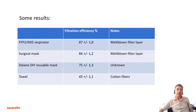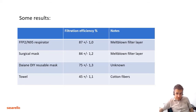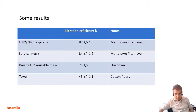Here we have the results expressed in terms of filtration efficiency for the four materials tested. The FFP2 respirator achieved a score of 87%. The surgical mask scored 84%, slightly less. My daughter's reusable mask gained a score of 75%, and the kitchen towel scored only 45%.